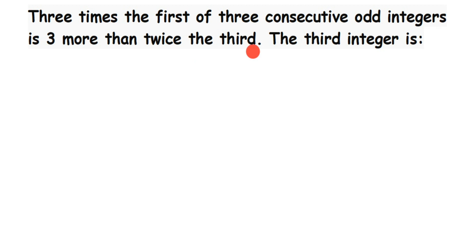Three times the first of three consecutive odd integers — before we form the relationship, they're talking about consecutive odd integers. Now since they have given integers here, this means the numbers can be negative also. If they had given consecutive numbers, the numbers would have to be only positive, but since we have integers, there can be negative numbers here too.